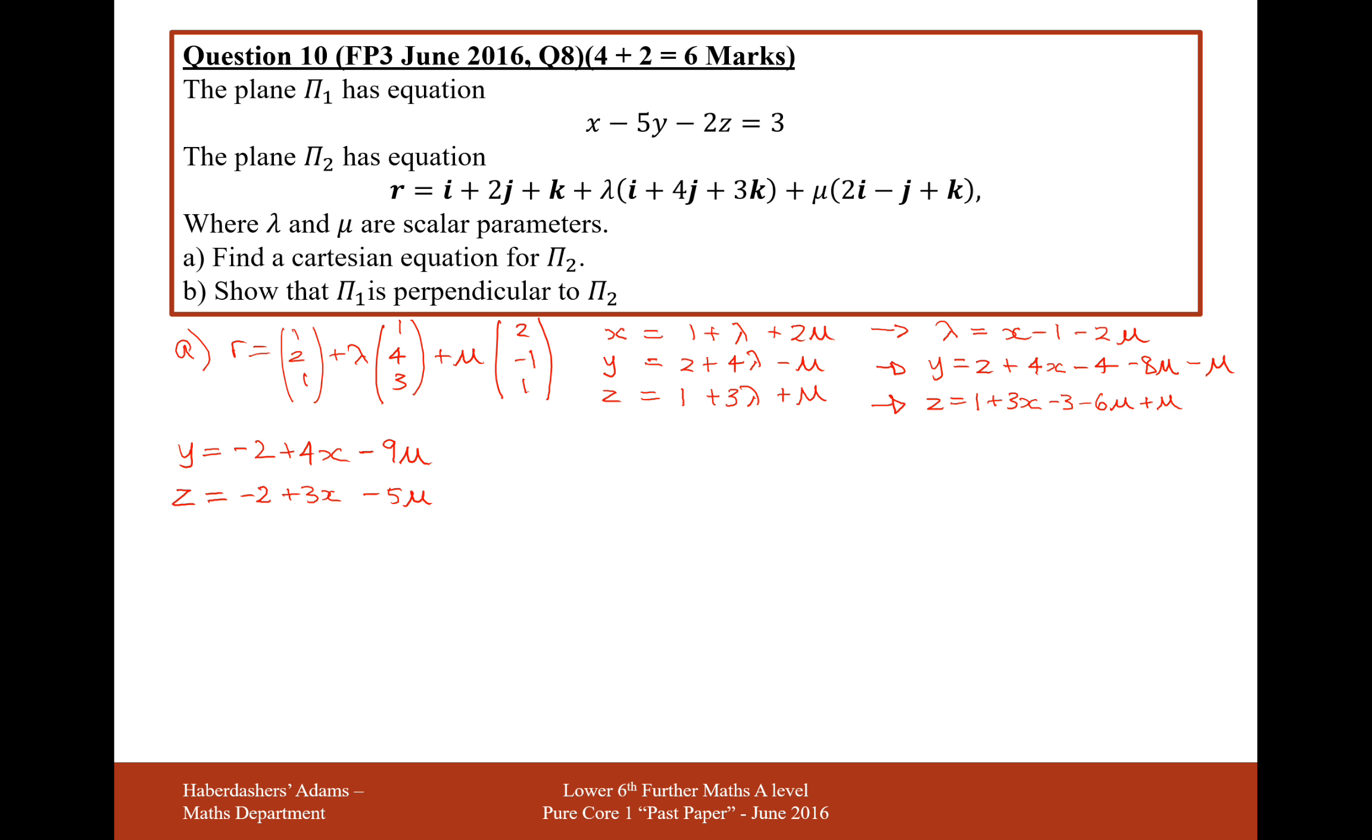So what we have to do now is eliminate this μ variable. I think I'll times the top equation by 5 and the bottom equation by 9, and then we can eliminate them by subtracting one equation from another. So we're going to get 5y equals minus 10 plus 20x minus 45μ. And on the second equation, 9z equals minus 18 plus 27x minus 45μ.